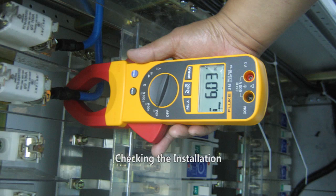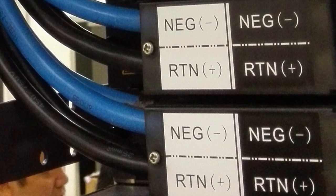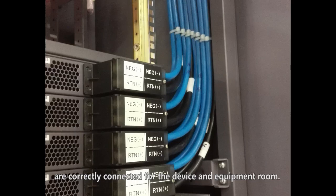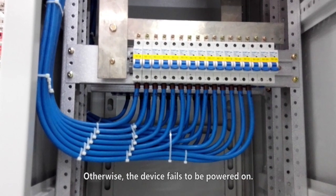Checking the installation. Check that the positive and negative poles of the power cables are correctly connected for the device and equipment room. Otherwise, the device fails to be powered on.